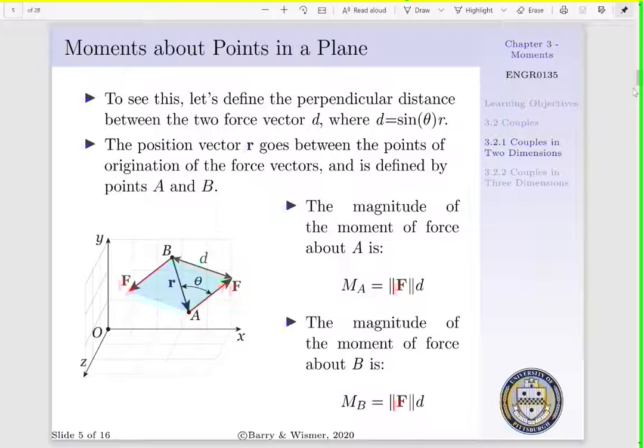To see this, we're going to define our perpendicular distance between our two force vectors as D, as shown in the green arrow below. D is equal to sine theta times R, where R is the magnitude of the position vector between points A and B, which define our points of origination of our force vectors. Sine theta is the angle between R and F.